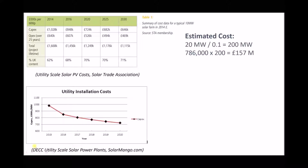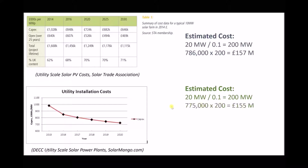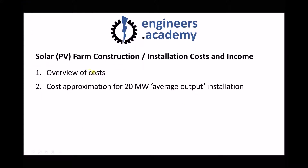Let's look at a second set of data, this one from the government's Department of Energy and Climate Change. If we look at 2018 and scan across, we can see that the average cost per megawatt is somewhere in the order of £775,000. So again, we start with our requirement of 200 megawatts, multiply by £775,000 per megawatt, and we get an approximation very close to our previous one — £155 million to construct that solar farm. So we've looked at the costs and made an approximation for our 20 megawatt average output installation.